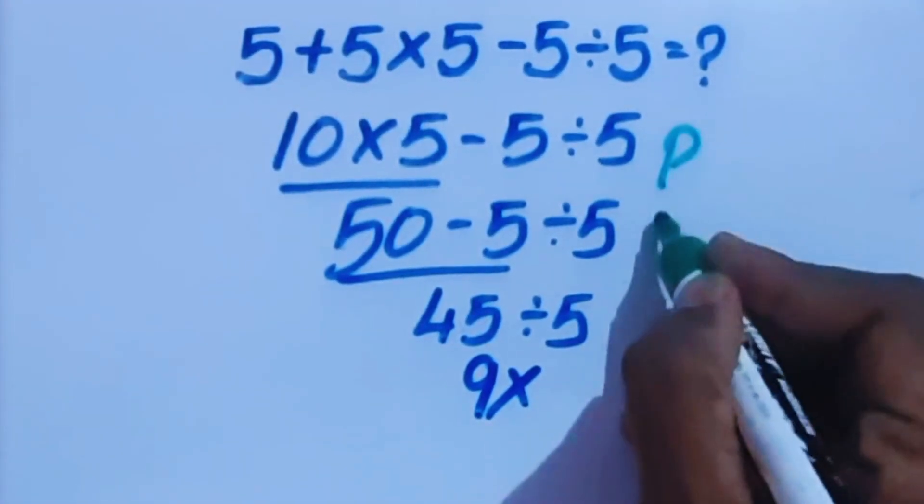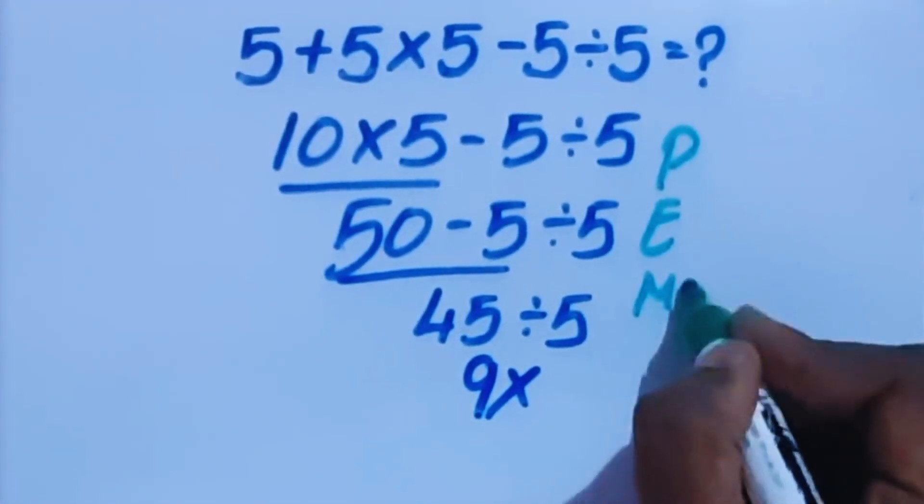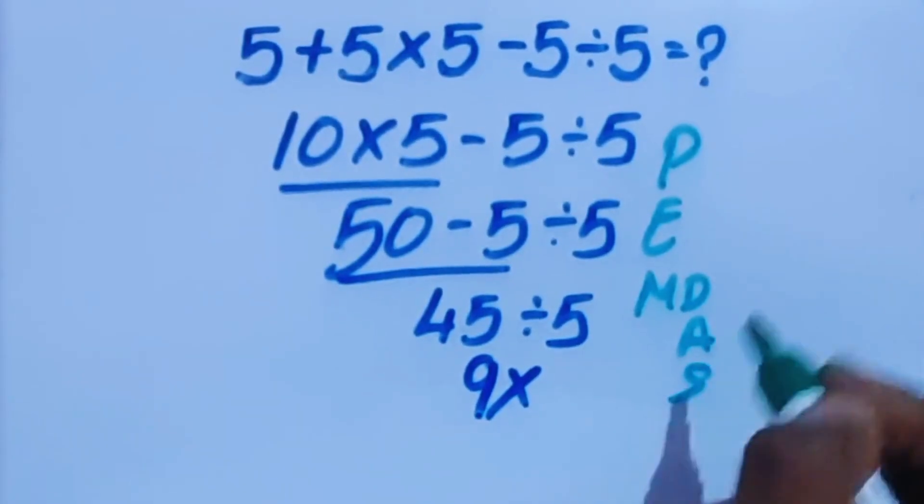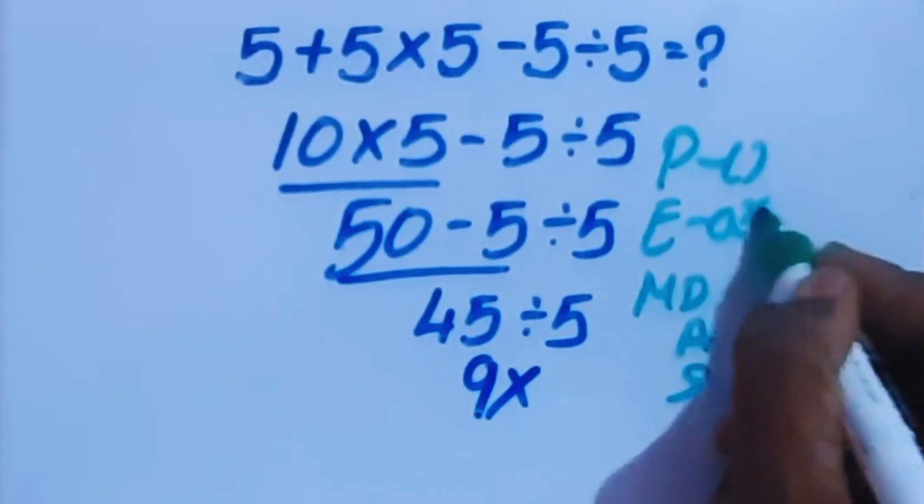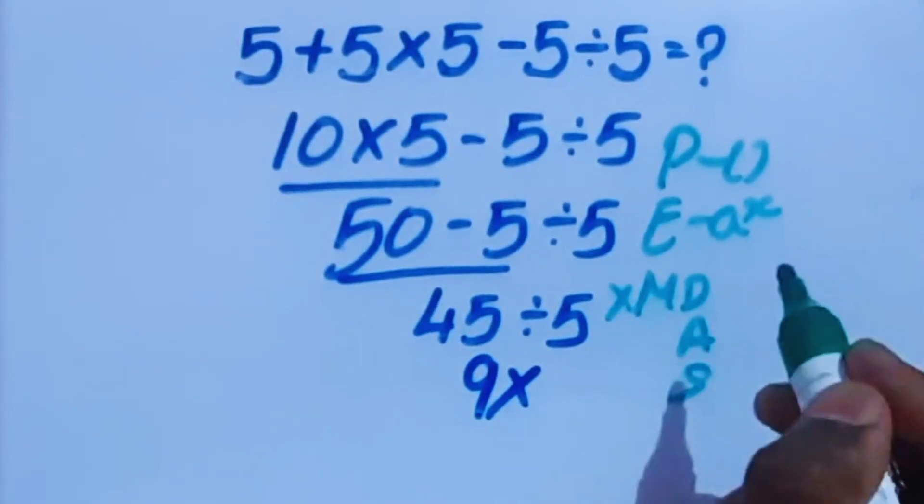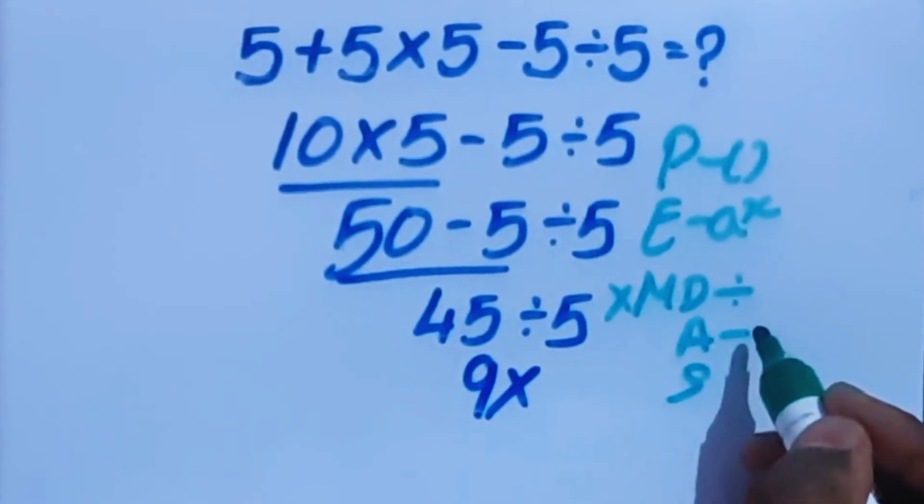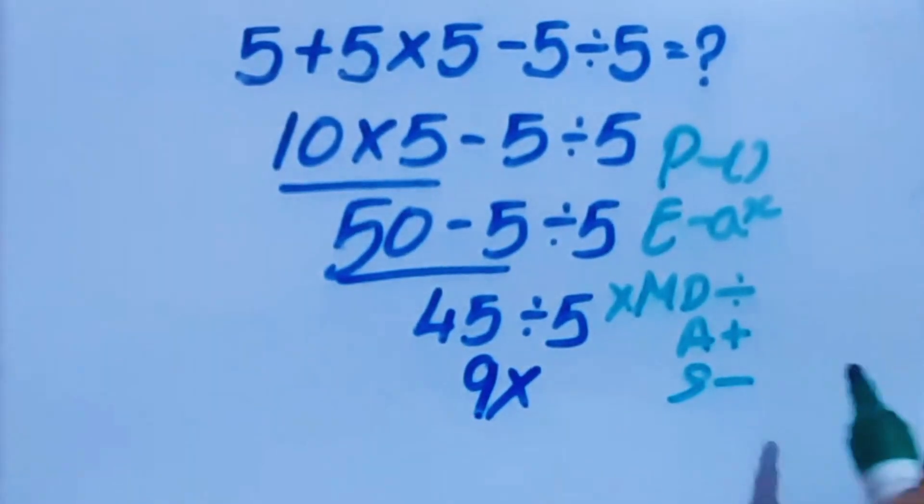We are going to introduce PANDA's rule from order of operations. P is bracket, E is exponent, M stands for multiplication, D stands for division, A stands for addition, S stands for subtraction.